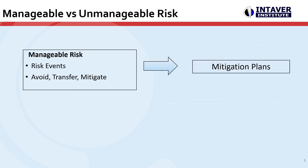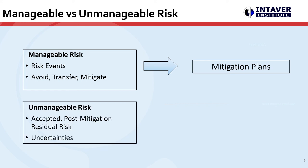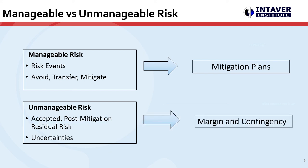After risks have been managed, your project still has unmanageable risk, which is the residual risk left after mitigation activities, plus the impact of uncertainties, which cannot be managed. Unmanageable risk cannot be reduced any further, so it is accounted for with schedule margin and cost contingency. Margin and contingency are set to a cumulative probability percentile that reflects an organization's risk tolerance. The higher the percentile, the lower the risk tolerance of an organization.